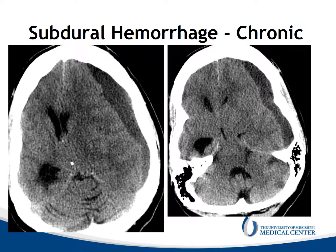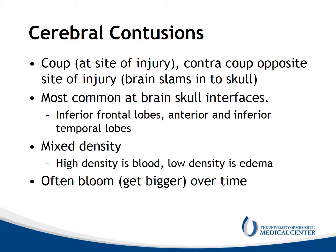Here's a chronic subdural hematoma. As we can see, it is hypodense, and it does cross the area of the coronal suture between the frontal and parietal bones. There is mass effect and midline shift, and we can see that the right temporal horn of the lateral ventricle is dilated, reflecting ventriculomegaly and a trapped ventricle.